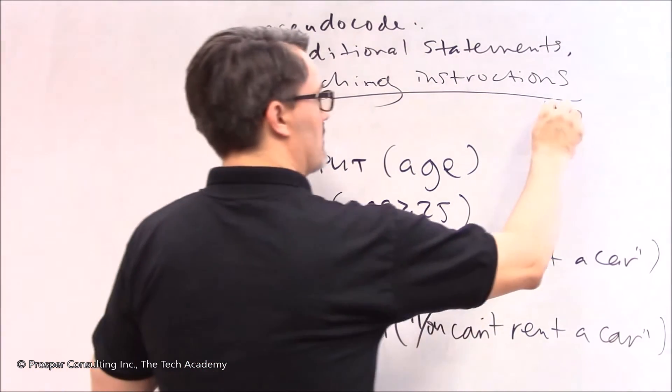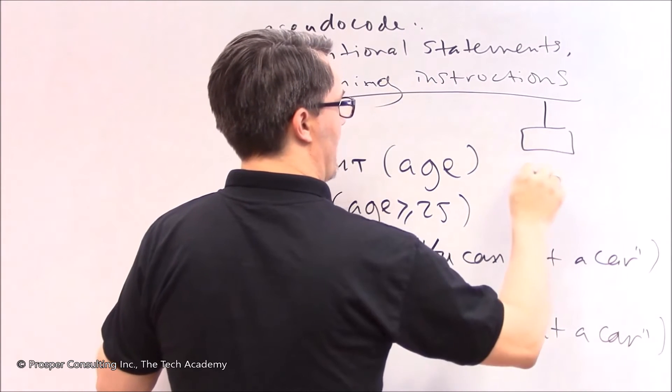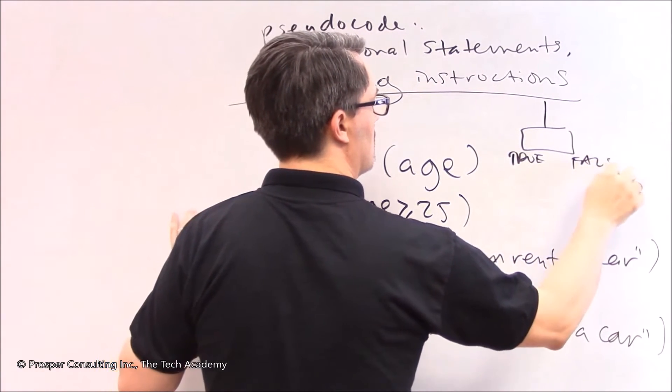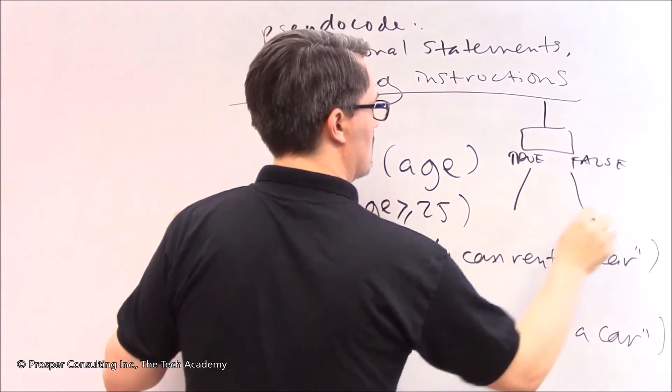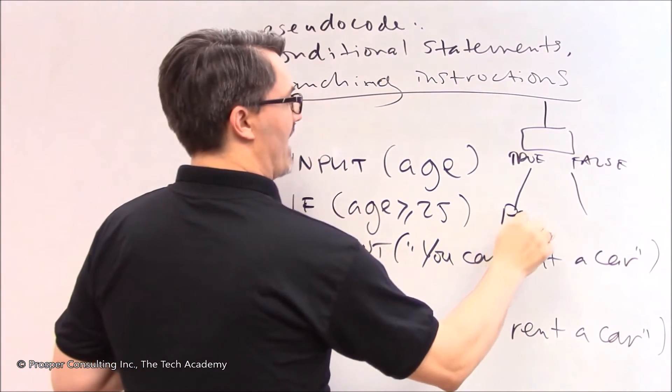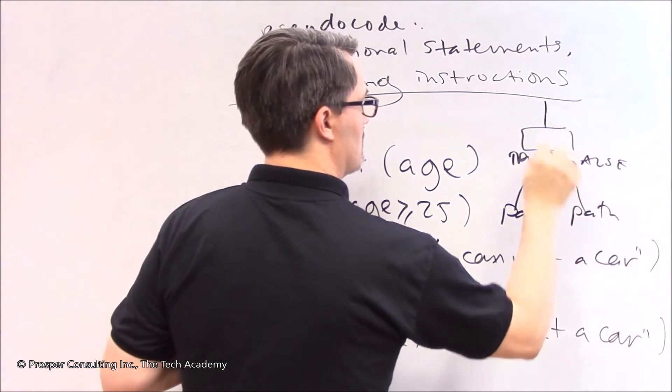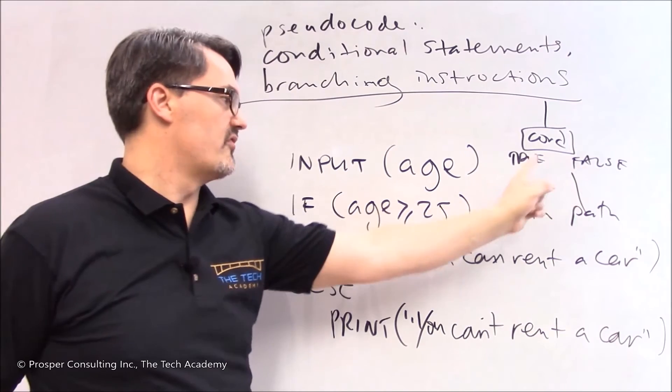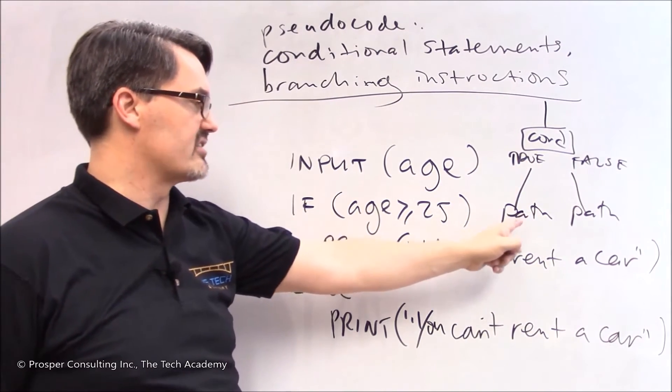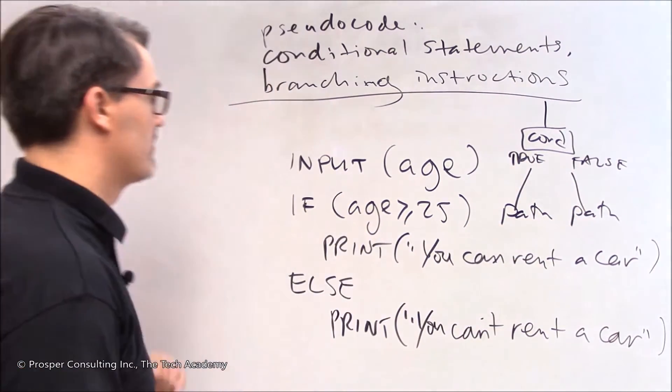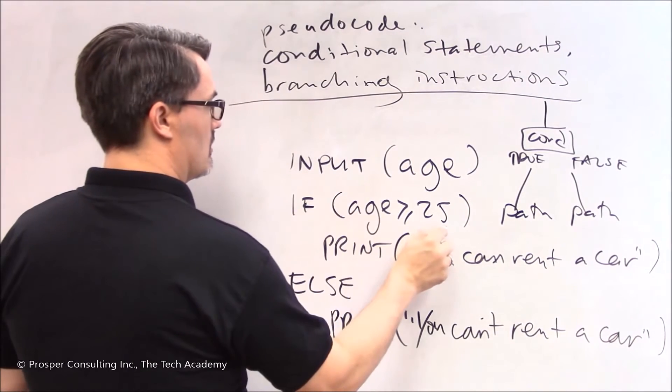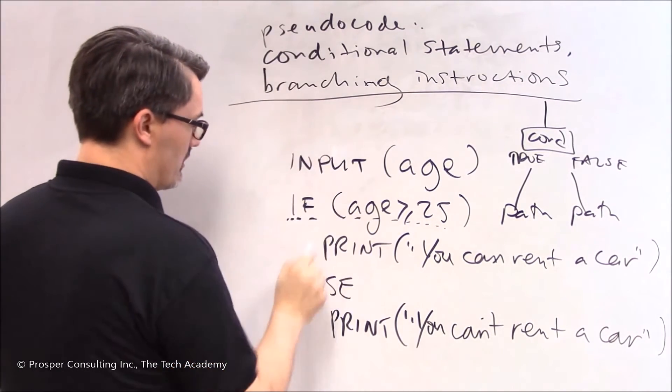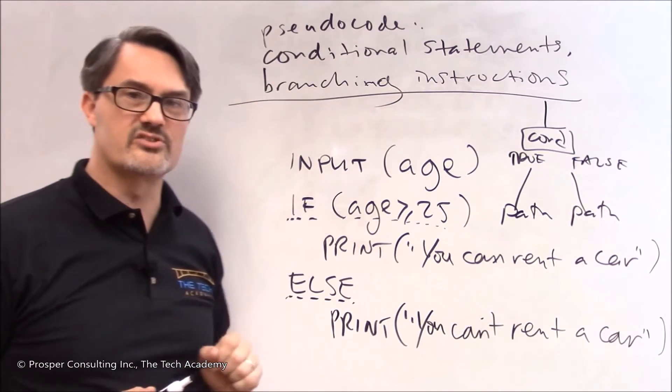This is much like the diagram that we looked at with two different paths of execution. A conditional statement. It's true or false. There's a branching instruction to execute one path or to execute another path. Here that's our conditional statement. Here and here are the branching instructions.